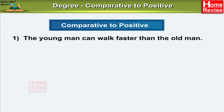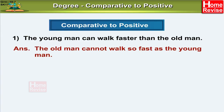The answer is: the old man cannot walk so fast as the young man. Remember, while changing from comparative to positive or from positive to comparative, one of either is a negative statement. Here, we have a positive comparative degree. Hence, we have a negative positive degree. So the answer is: the old man cannot walk so fast as the young man.